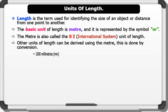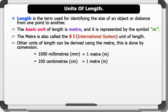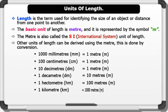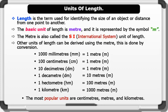Where 1000 millimeters equals 1 meter, 100 centimeters equals 1 meter, 10 decimeters equals 1 meter, 1 decameter equals 10 meters, 1 hectometer equals 100 meters, 1 kilometer equals 1000 meters. Note that the most popular units are centimeters, meters, and kilometers.